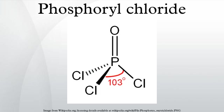In the laboratory, POCl3 is widely used as a dehydrating agent, for example in the conversion of primary amides to nitriles. Similarly, certain aryl amides can be cyclized to dihydroisoquinoline derivatives using the Bischler–Napieralski reaction. Such reactions are believed to go via an imidoyl chloride. In certain cases where it is stable, the imidoyl chloride is the final product; for example, pyridones and pyrimidones can be converted to chloro-derivatives of pyridines and pyrimidines, which are important intermediates in the pharmaceutical industry.